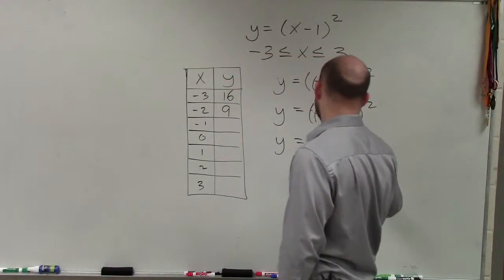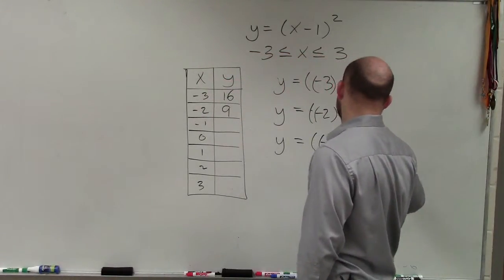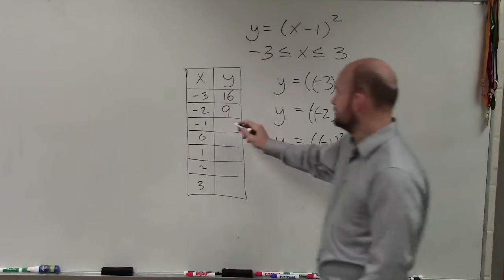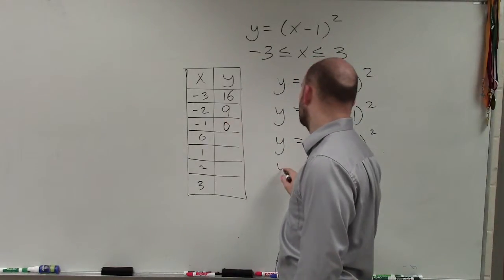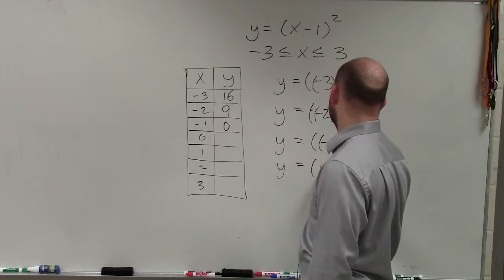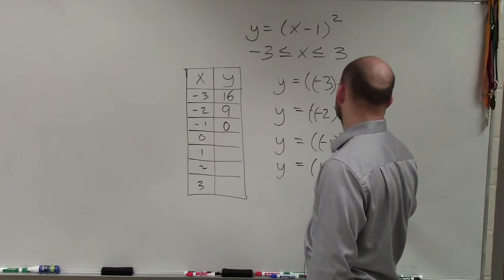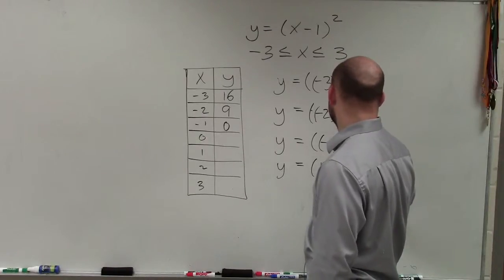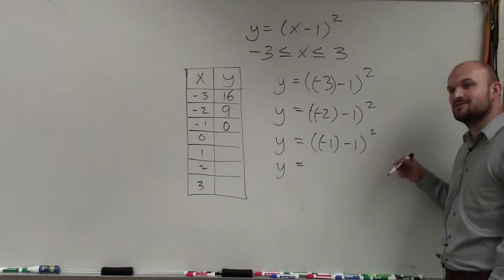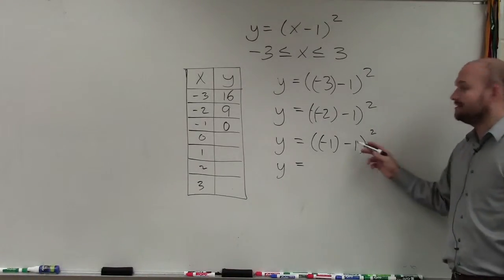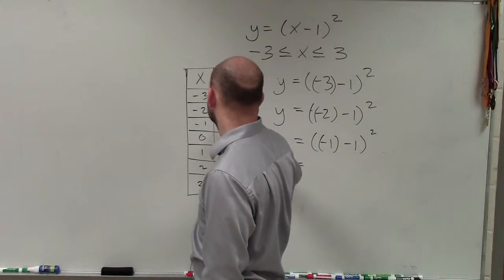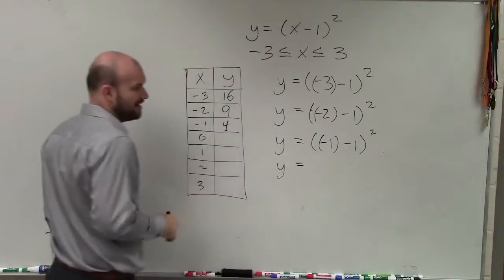Y equals negative 1 squared. Negative 1 squared is 1. 1 minus 1 is 0. 0 squared is just 0. Wait a minute. Why did I square that? I don't know. Negative 1 minus 1 is going to be negative 2. Negative 2 squared is equal to positive 4. Yeah. My bad. I don't know why I put the square there.